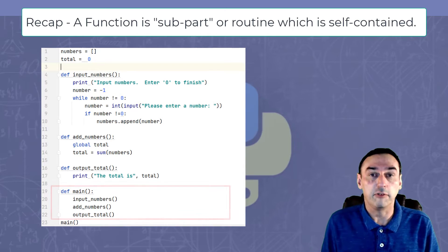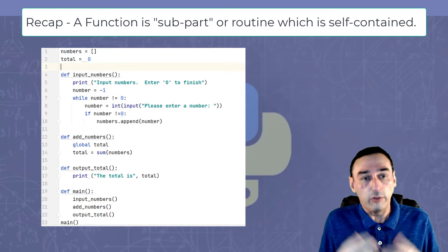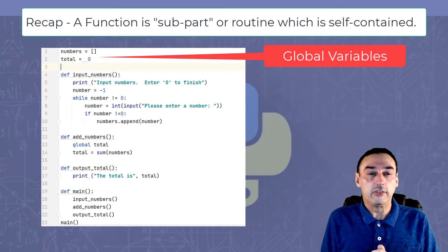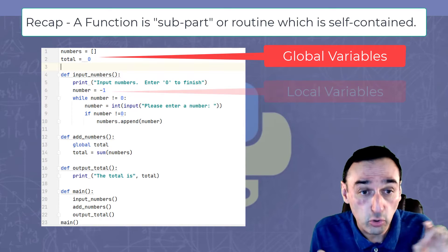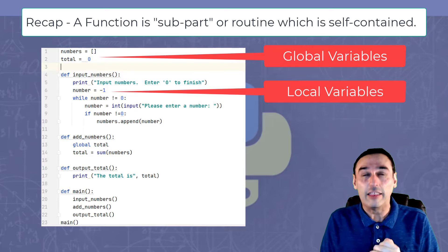We also have the global variables which exist at the top and they are defined for the whole program. Then you have the local variables which exist within the functions and they are only accessible within the function.